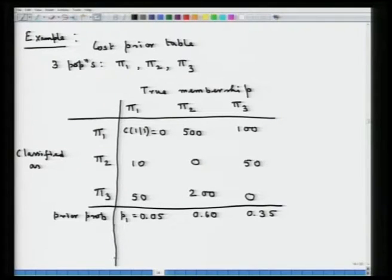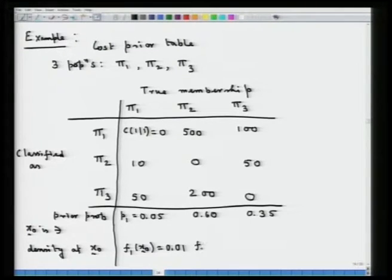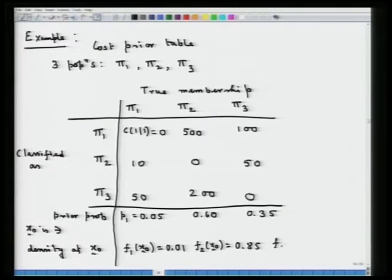Now let us also have the prior probabilities. The prior probabilities of π₁, π₂, and π₃ are p₁ = 0.05, p₂ = 0.60, and p₃ = 0.35. The sum of these three prior probabilities is of course equal to 1, because we are assuming there are only three populations (C = 3).